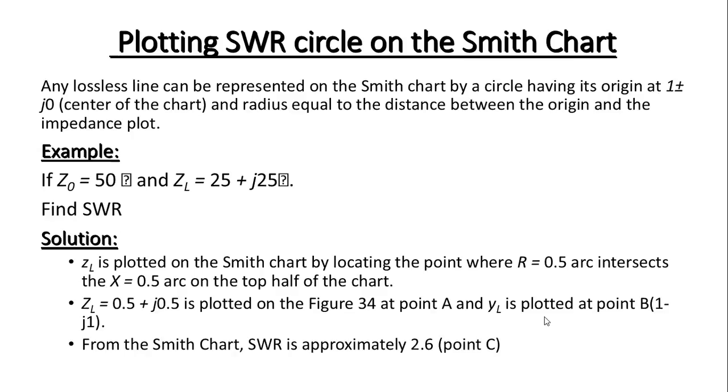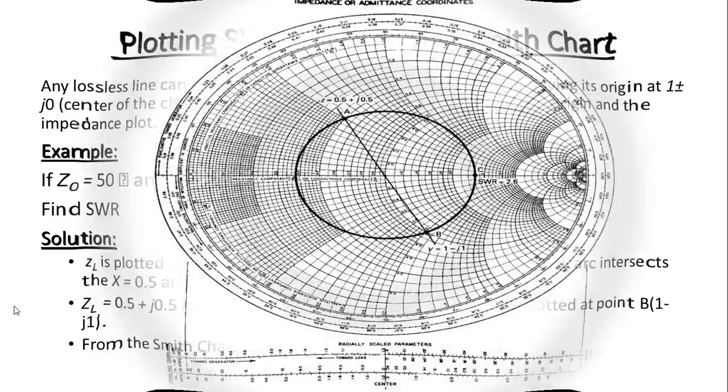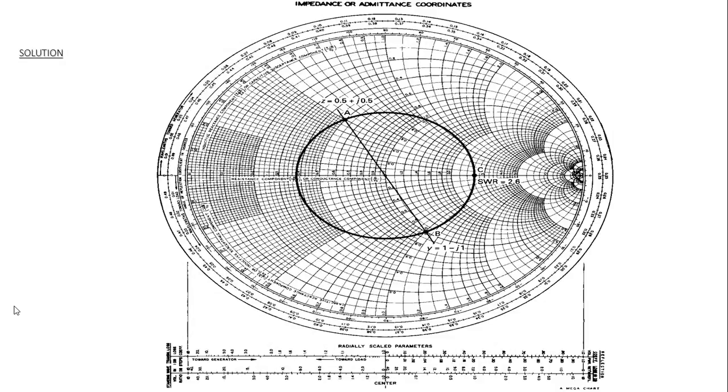Here is an example where Z naught equals 50 ohms and Z equals 25 plus j25 ohms. Now we find out SWR. Let's see the solution on the Smith Chart.